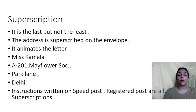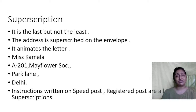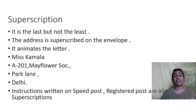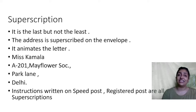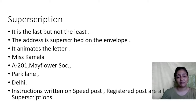The next is superscription — last but not the least. The address is superscribed on the envelope. It animates the letter, meaning it adds color and makes it more impressive. That is nothing but the name of the person and address — for example, Miss Kamala, name of her street, room number, building, and her city. Instructions written on the speed post and registered post are all superscriptions.